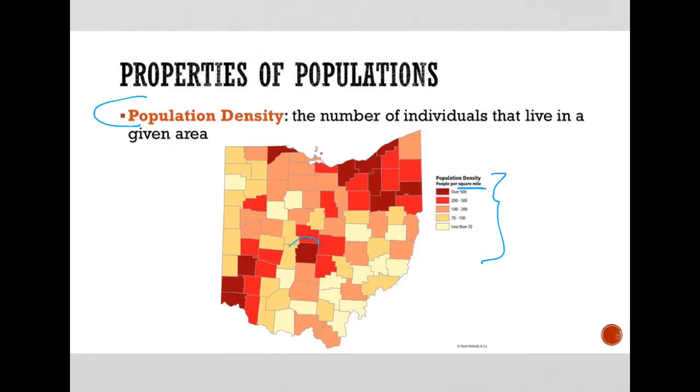And so, for example, Franklin County is this dark red county. That's where Columbus is. Obviously, very high in population density, whereas lots of other areas have less density. For all we know, they could have the same number of individuals, but the space might be larger or smaller. It's probably not the case with these, but that could be the case with a given population that you're studying.